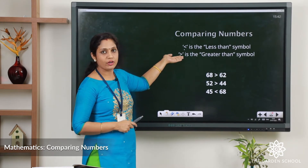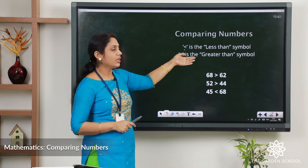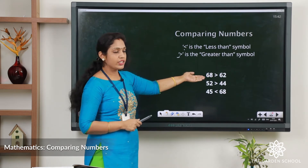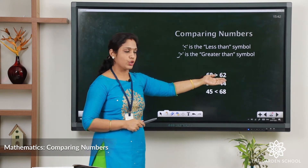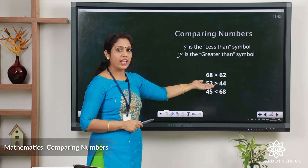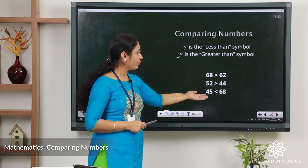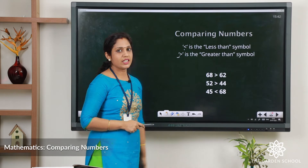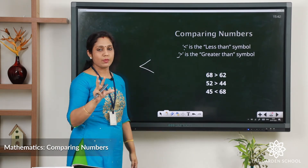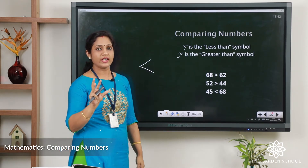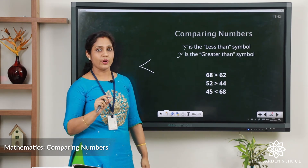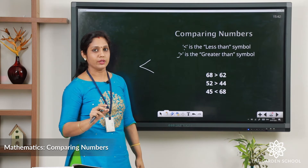Now there are symbols for less than and greater than. This is the symbol for less than and this is the symbol for greater than. So: 68 greater than 62, 52 greater than 44, 45 is less than 68. The symbol always opens its mouth to the greater number — just remember this.